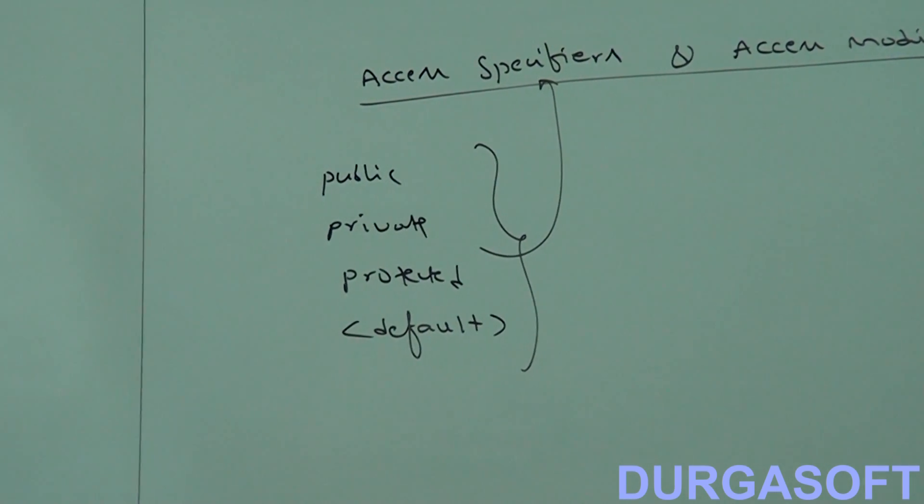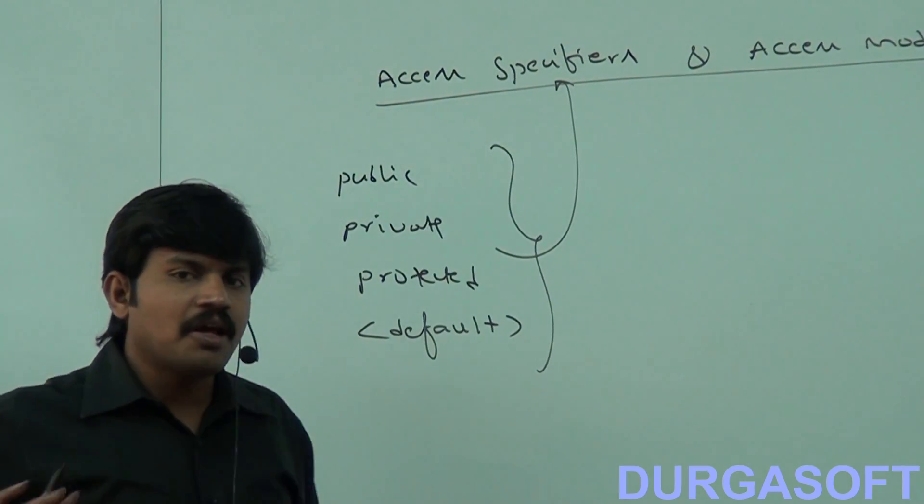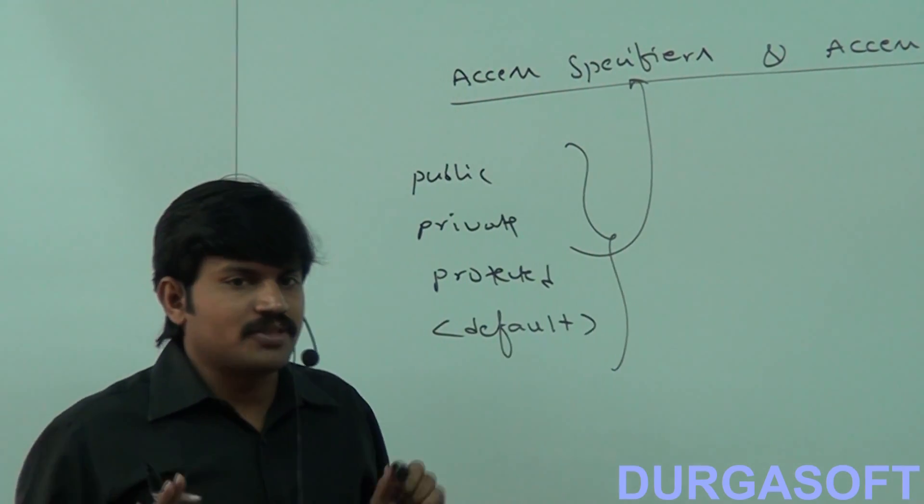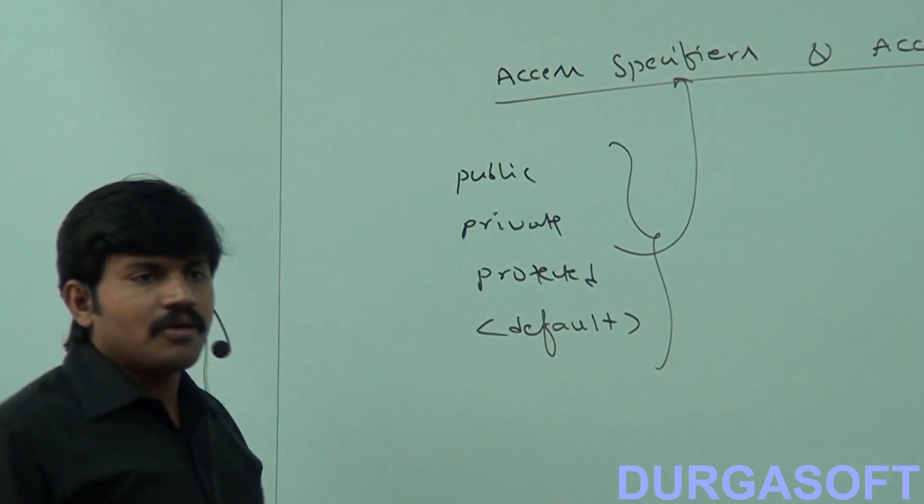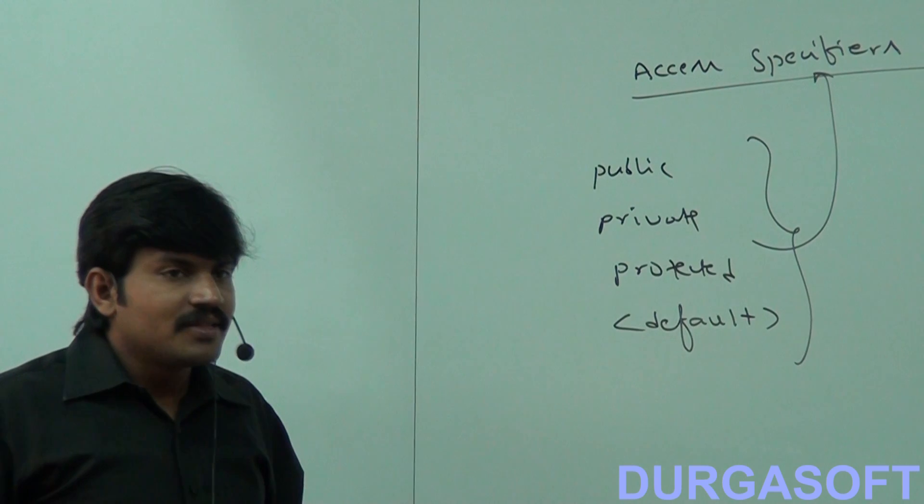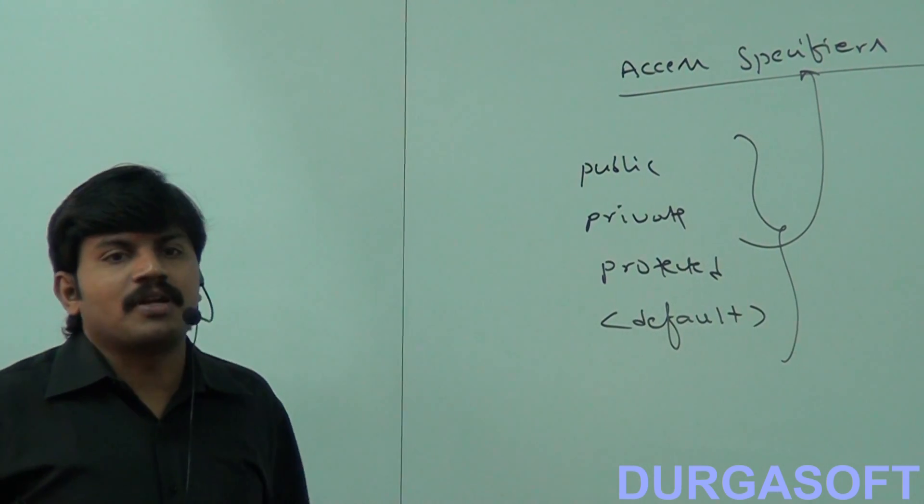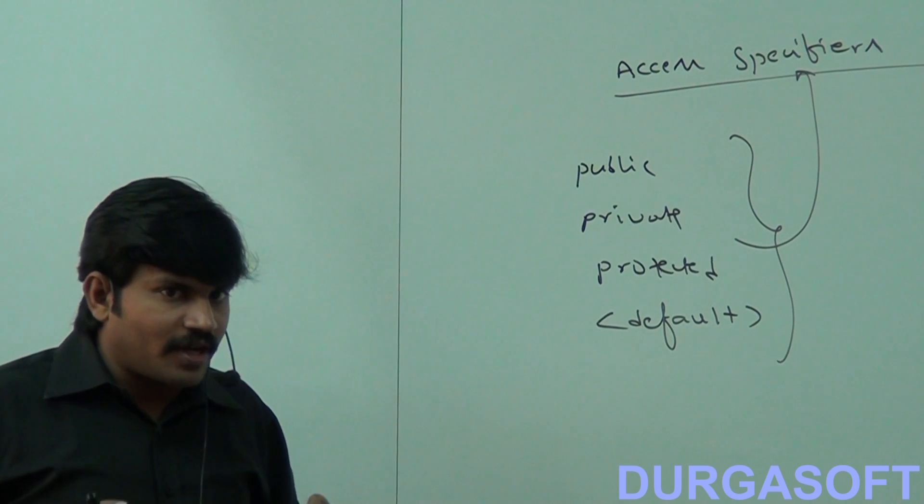In Java, there is no terminology like specifiers. All are by default considered as modifiers only. In Java, private, public, protected, default - these are considered as modifiers only, but not specifiers. Is it clear for all of you?